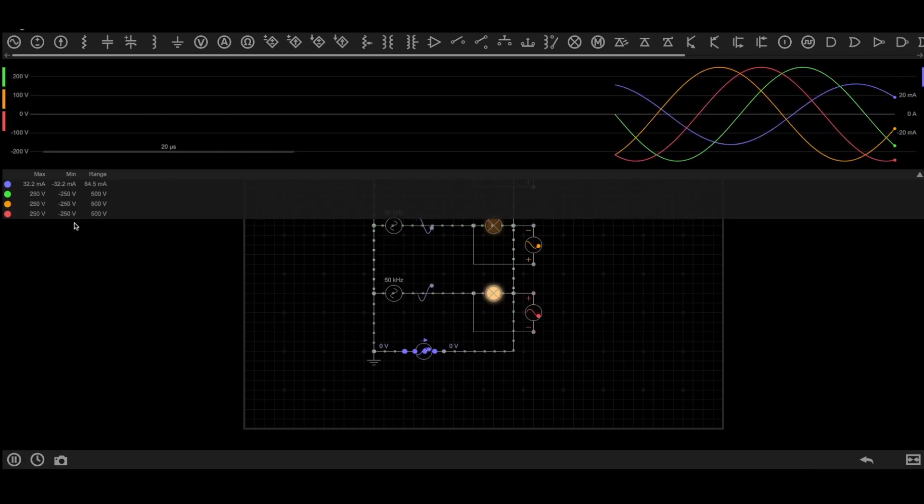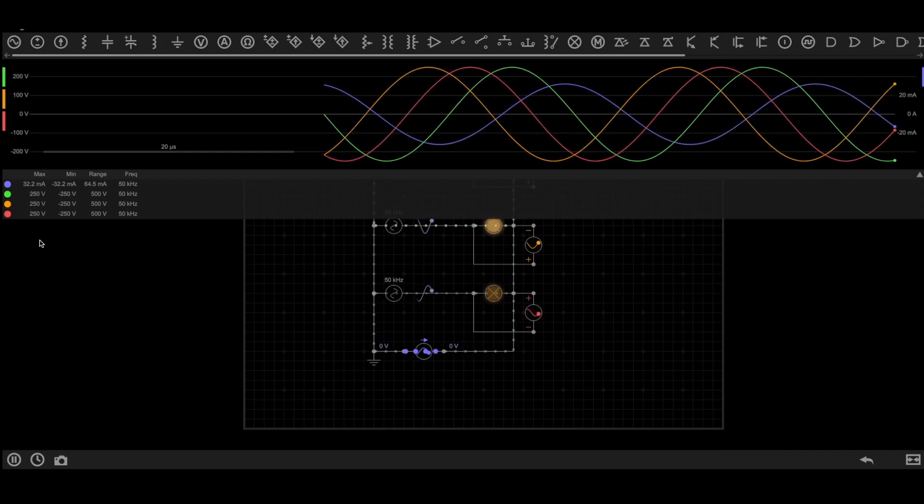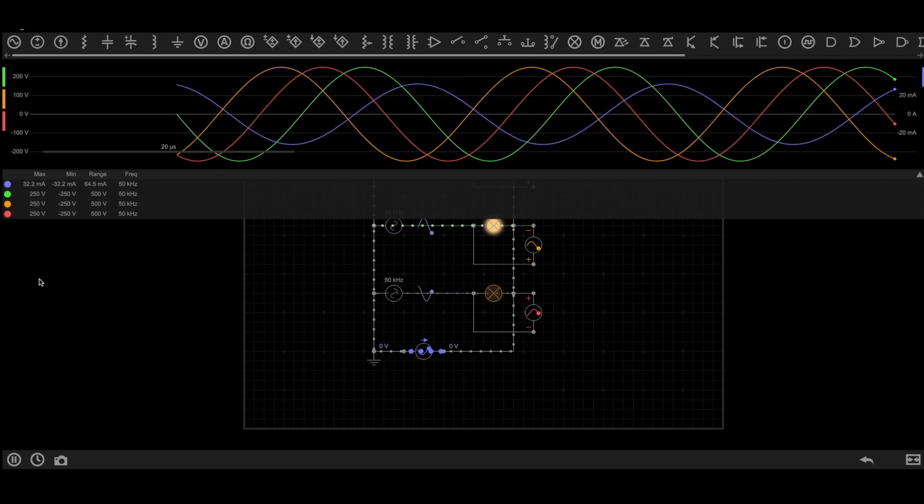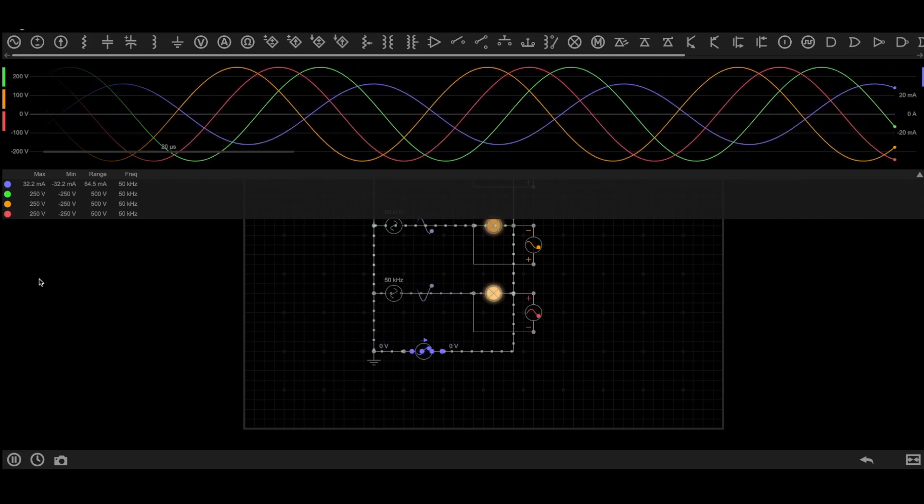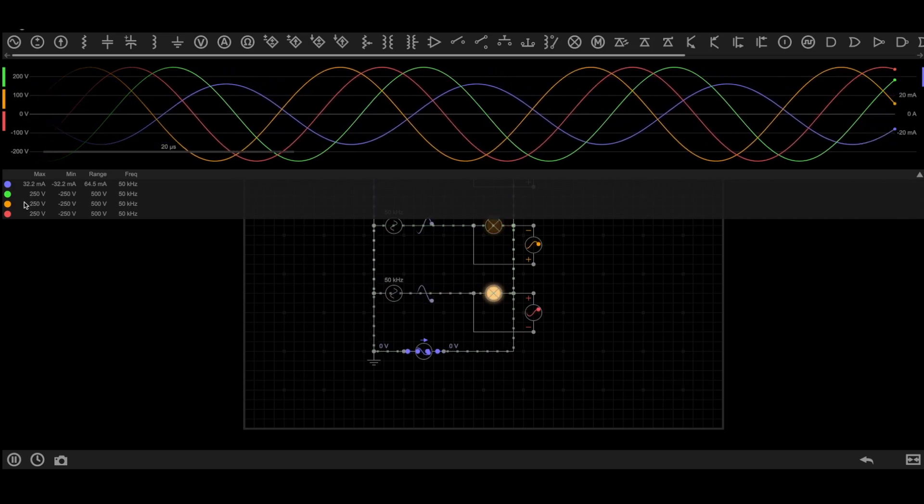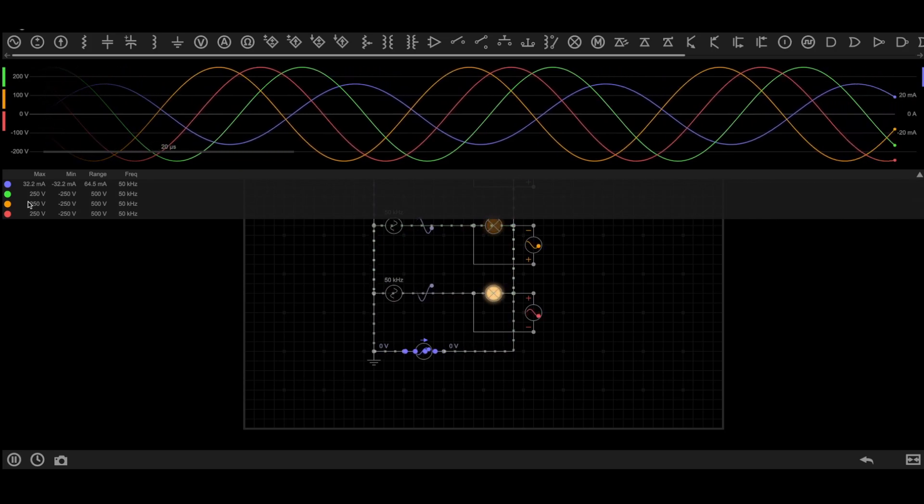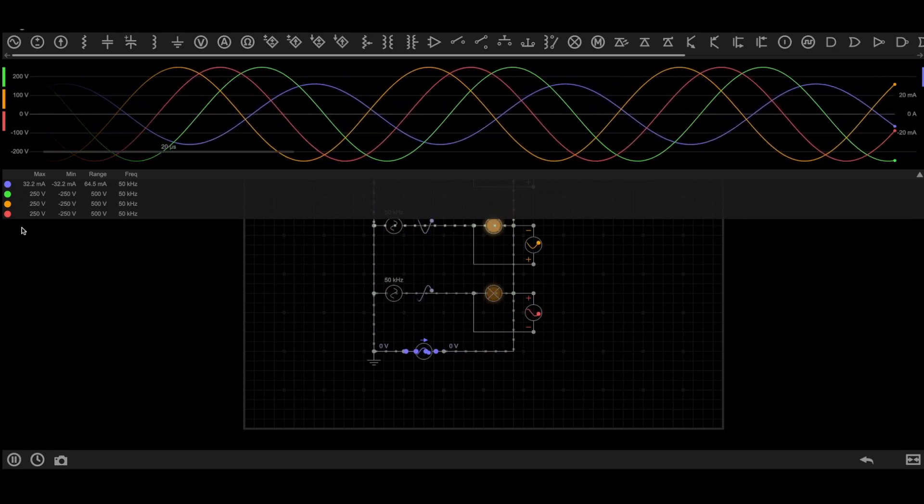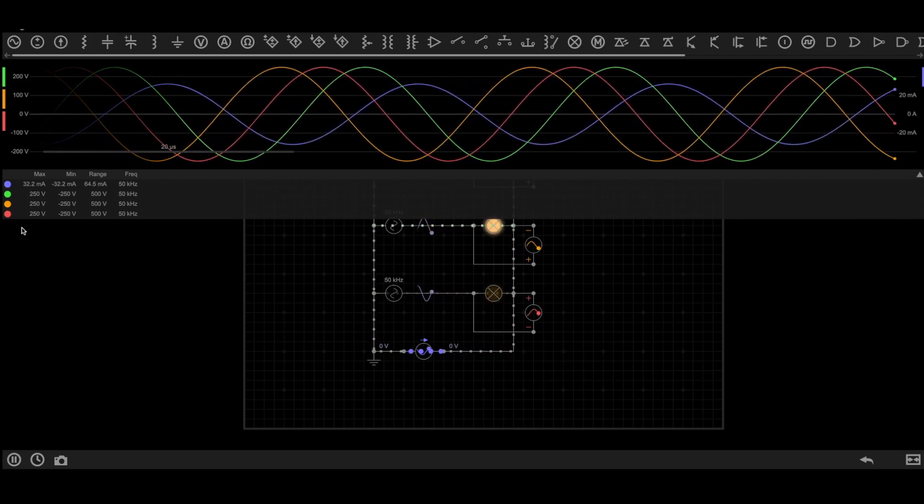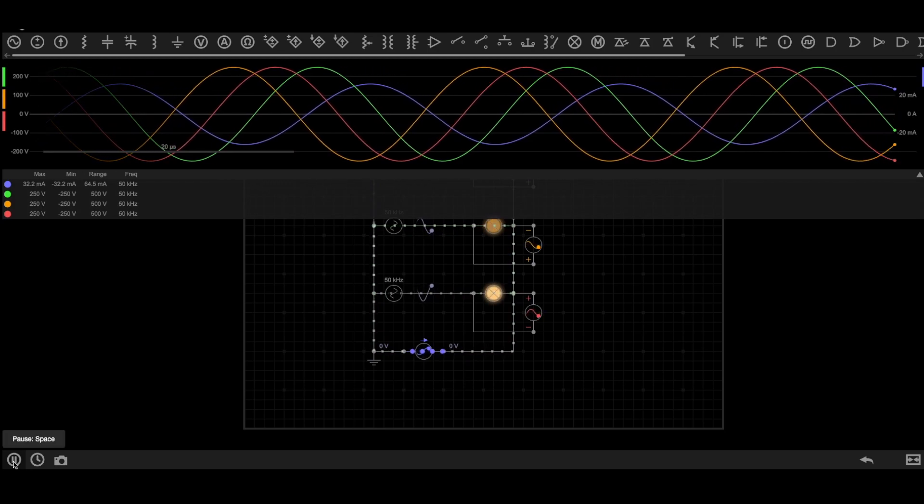As you can see, the ammeter is now reading 32.2 milliamperes. This is the current coming because of the unbalanced load, which proves our second statement. Now even if the load is unbalanced, you can see voltage across each load is constant at 250 volts. Here are the readings of voltmeter. That's the reason why you need neutral in distribution systems. This is why neutral is so important in distribution systems.